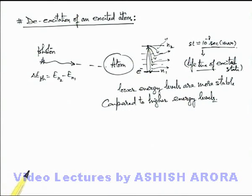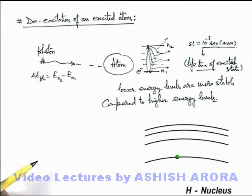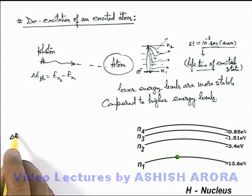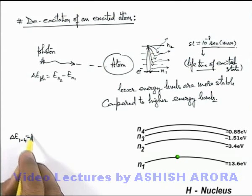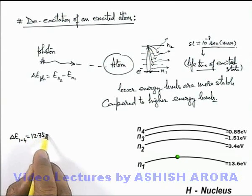Let's have a look over the realistic situation also. Here you can see this is the energy band diagram for a hydrogen atom, in which we are seeing here the four energy levels 1, 2, 3, and 4. Corresponding energies are also written here. We know that energy difference of 1 and 4 state is 12.75 electron volts.